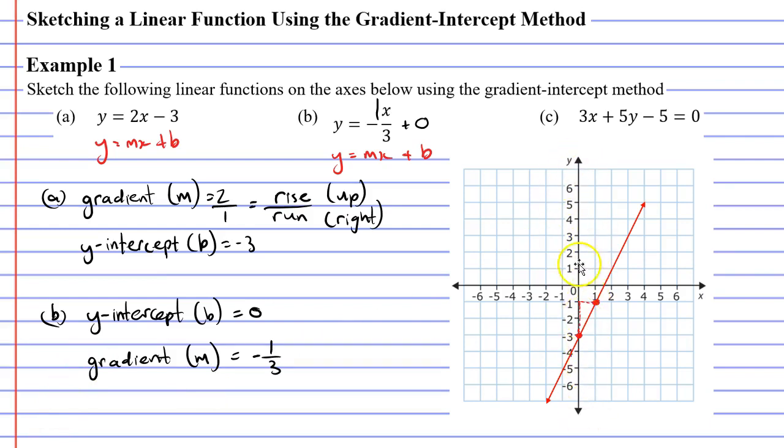Looking at our y axis we want to label our y intercept which is at zero this time. Once again our gradient is always represented in the form rise over run.